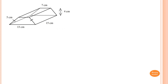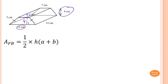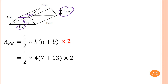For this solid, the front and the back are the same, and the left and right are the same. The front is a trapezium with A equal to 7 cm, B equal to 13 cm, and perpendicular height H equal to 4 cm. The area of both trapeziums is a half of H times (A plus B), times 2, giving me 80 square centimeters.